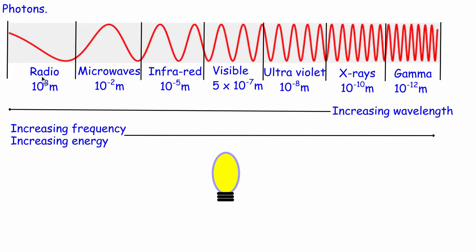Radio waves typically have a wavelength — a distance from peak to peak — of around 10 to the power of 3 metres. Whereas as we move through the electromagnetic spectrum up to gamma rays, this wavelength goes down. And vice versa, moving from gamma rays to radio waves, we have an increasing wavelength.